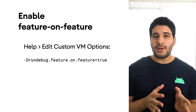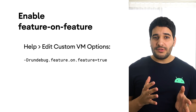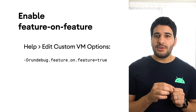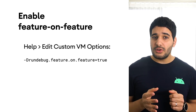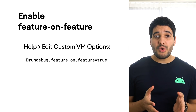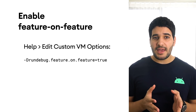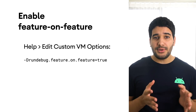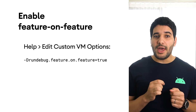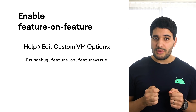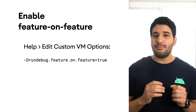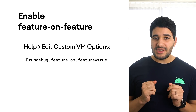Android Gradle Plugin 4.0 fully removes the com.android.feature and com.android.instantapp plugins, which were deprecated since the previous release. Developers who have not yet migrated their Instant App to App Bundles must do so now, in order to upgrade the Android Gradle plugin to the new version, which brings its own benefits and simplifies your app's modular design.